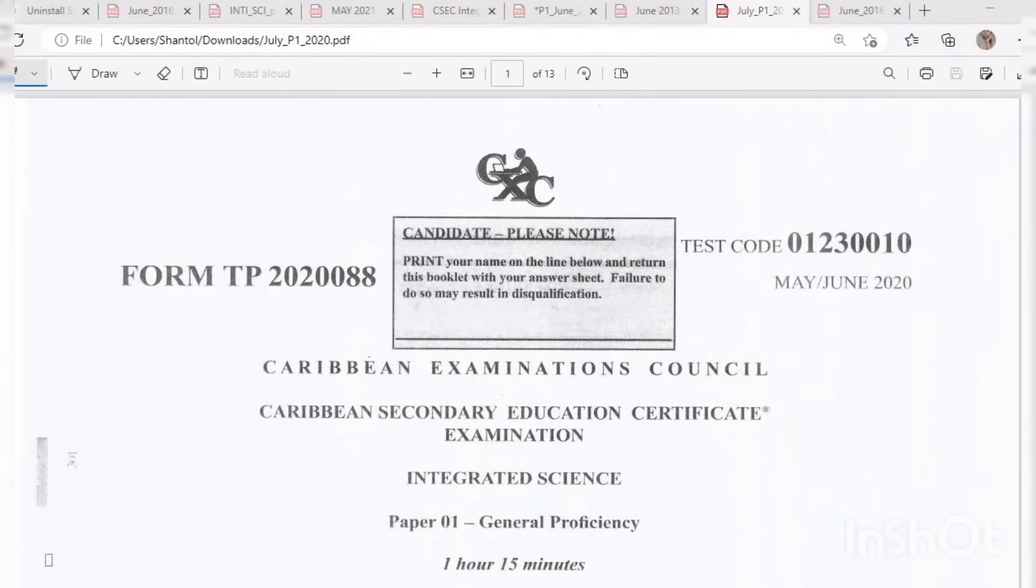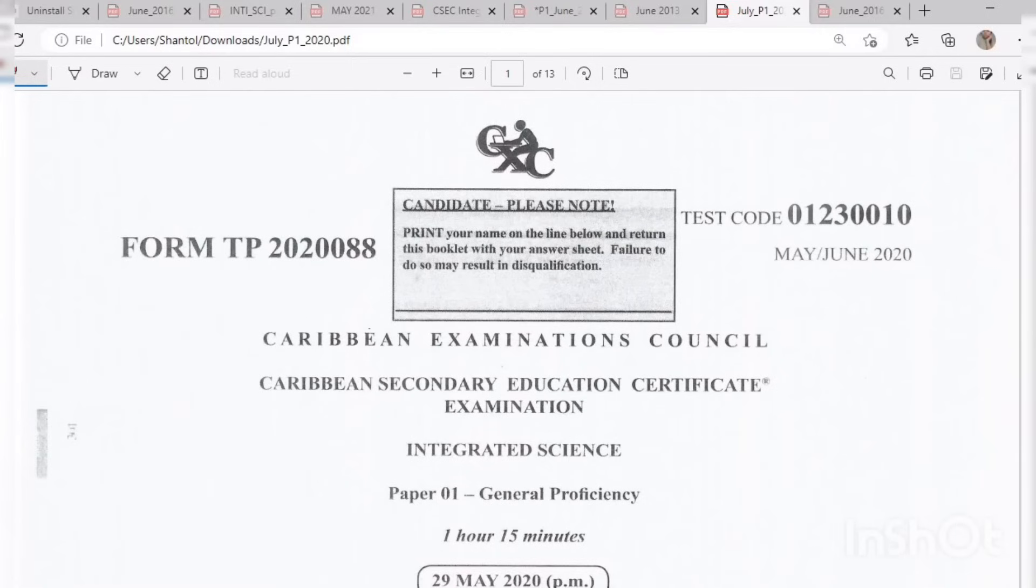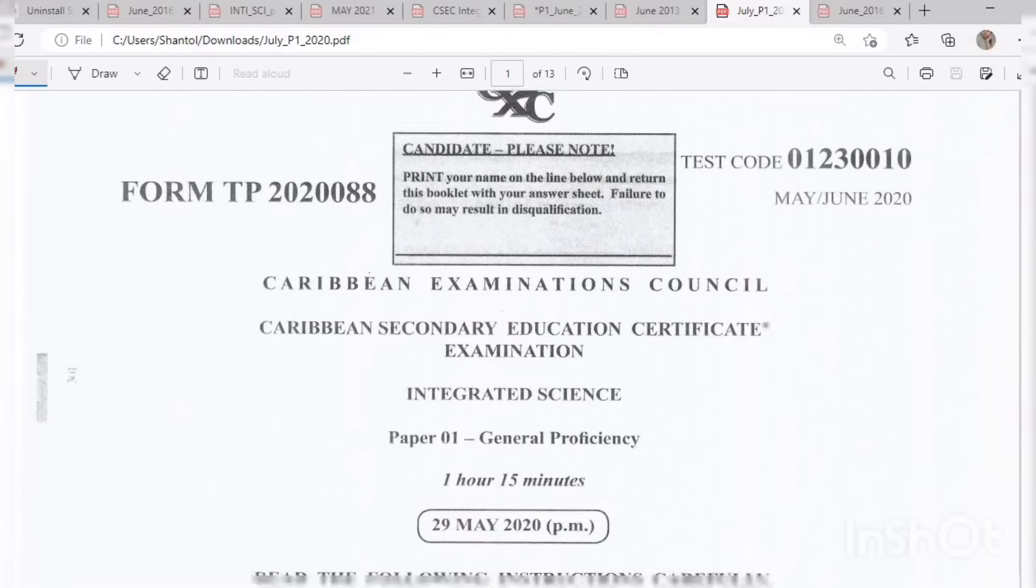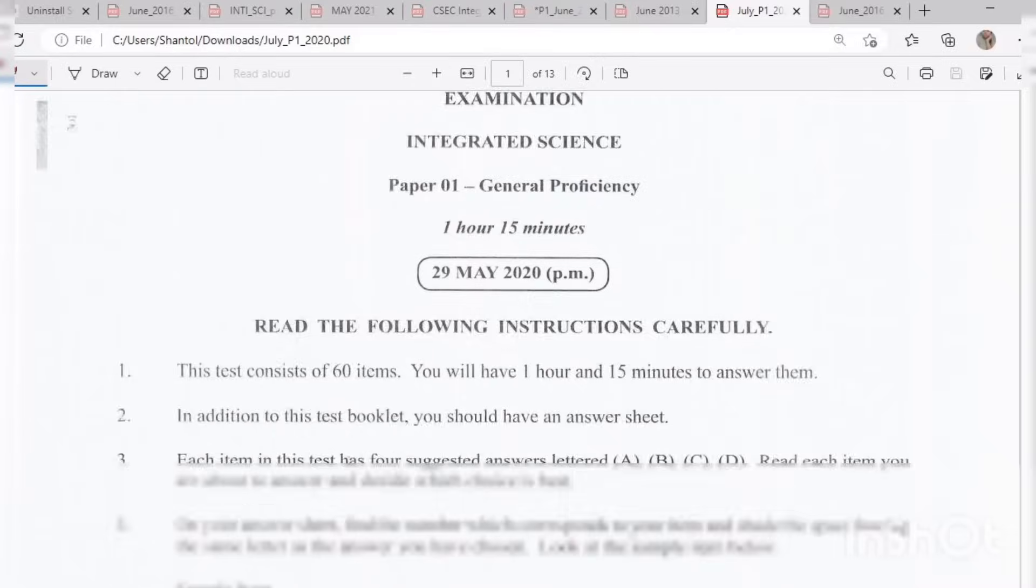Hi there guys and welcome back to the YouTube channel Past Papers 101 with Miss Edwards. I hope all of you have been studying and you are ready for your exam. Today we'll be going through the Integrated Science Paper 1 May June 2020 for CSEC examinations. You're going to be going through each question and we'll be answering them together. So let's get straight into this paper.